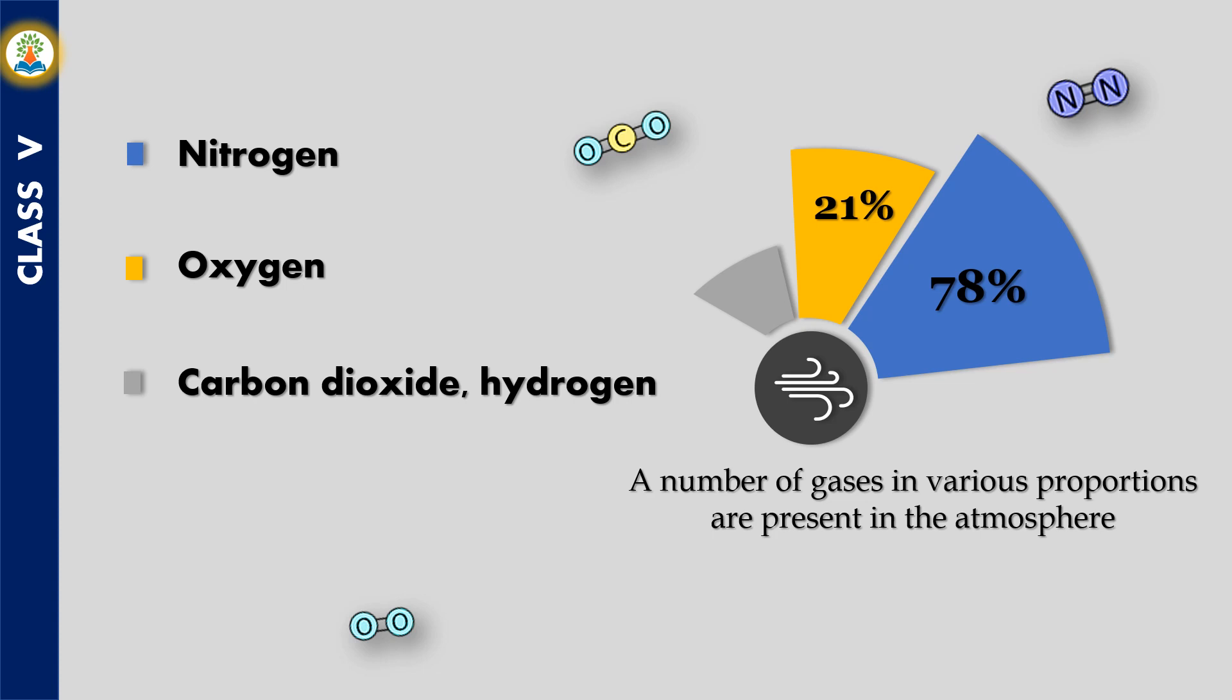The rare gases, also known as the noble gases, are a group of six gaseous elements found in small amounts in the atmosphere: helium, neon, argon, krypton, xenon, and radon. Collectively, they make up about one percent of the Earth's atmosphere.